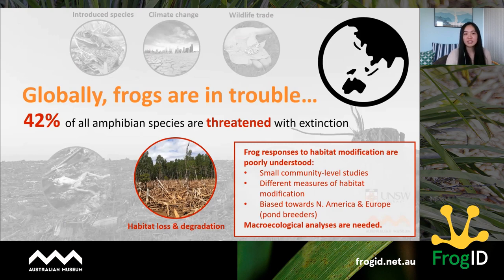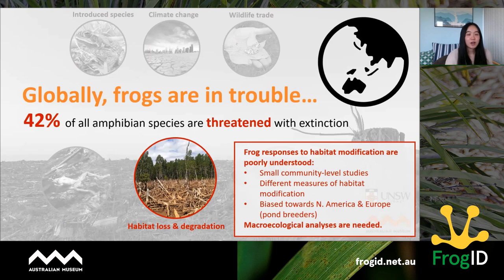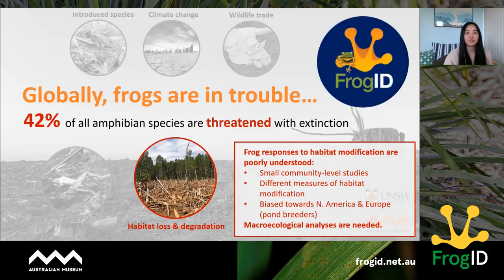Frog responses to habitat modification are pretty poorly understood. Most of what we know comes from small community-level studies that are often very spatially restricted with only a few species. A lot of them use different, often region-specific measures of habitat modification, so it's quite difficult to compare between studies, and a lot of them have been conducted in North America and Europe, biased towards pond-breeding species. So what we really need is macroecological analyses, but to do this we need a lot of data — and this is really where citizen science holds a lot of power.